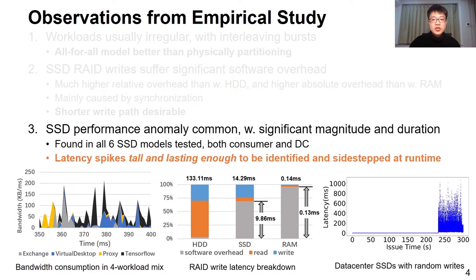Finally, while it is known that SSDs suffer slowdowns from activities such as garbage collection, our study with six SSDs — both consumer and data center models — measured the magnitude and duration of such latency spikes. The figure here gives an example where we see one on a data center SSD lasting around 60 seconds with a latency increase of 1000 times. This leads us to argue that SSD latency spikes are tall and lasting enough to be identified at runtime, so we can stay away.